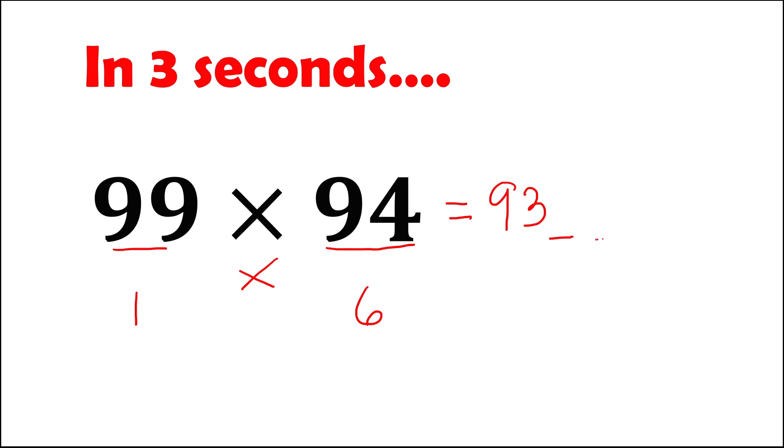Then the last two digits, multiply these two numbers. So 1 times 6, this is 6, or 06. So this is equal to 9,306.